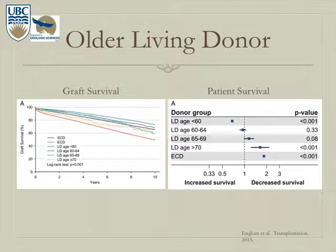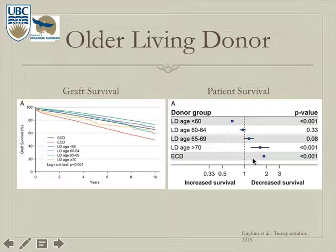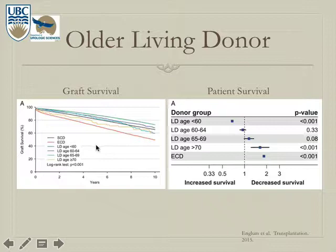As we operate on more older people, patient survival data for older living donors shows that around age 65 and above, outcomes start approaching the ECD category. Below 65, healthy donors generally do quite well. A graft survival graph confirms this trend: the ECD category has the worst prognosis, the under-60 group has the best outcomes, and everything else falls between accordingly.